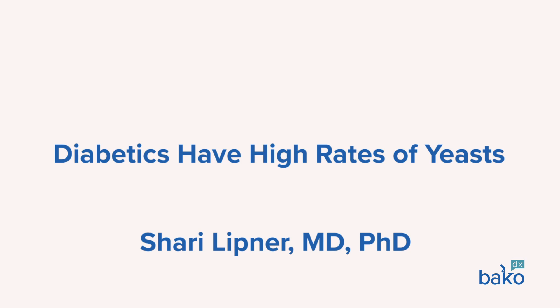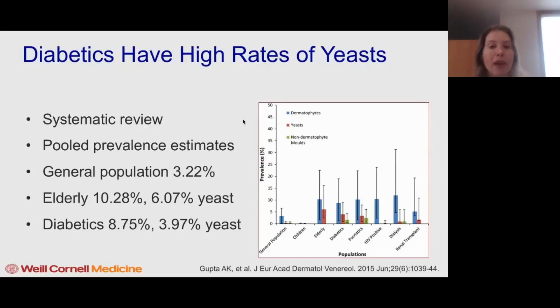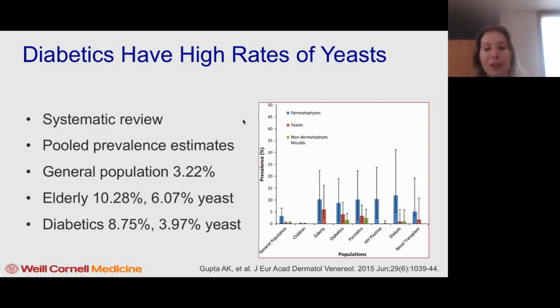Now, let's speak specifically about the diabetic population. This was a study by Gupta published in the JEADV in 2015. Their group did a systematic review looking at pooled prevalence estimates of onychomycosis. In the general population, the prevalence of onychomycosis was 3.22%. And if we look specifically at yeast causing these onychomycosis infections,